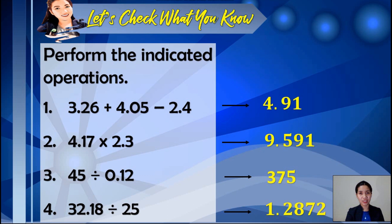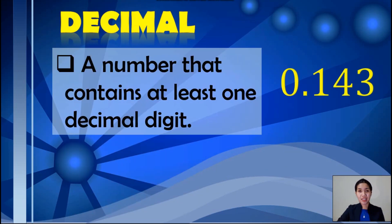Now, let us move to the following concepts. First, let us define decimal. Decimal is a number that contains at least one decimal digit, just like the example here. In reading a decimal, take note that the first digit is called the tenths place, second is the hundredths place, and the third the thousandths place. So in this case, this is read as 143 thousandths.